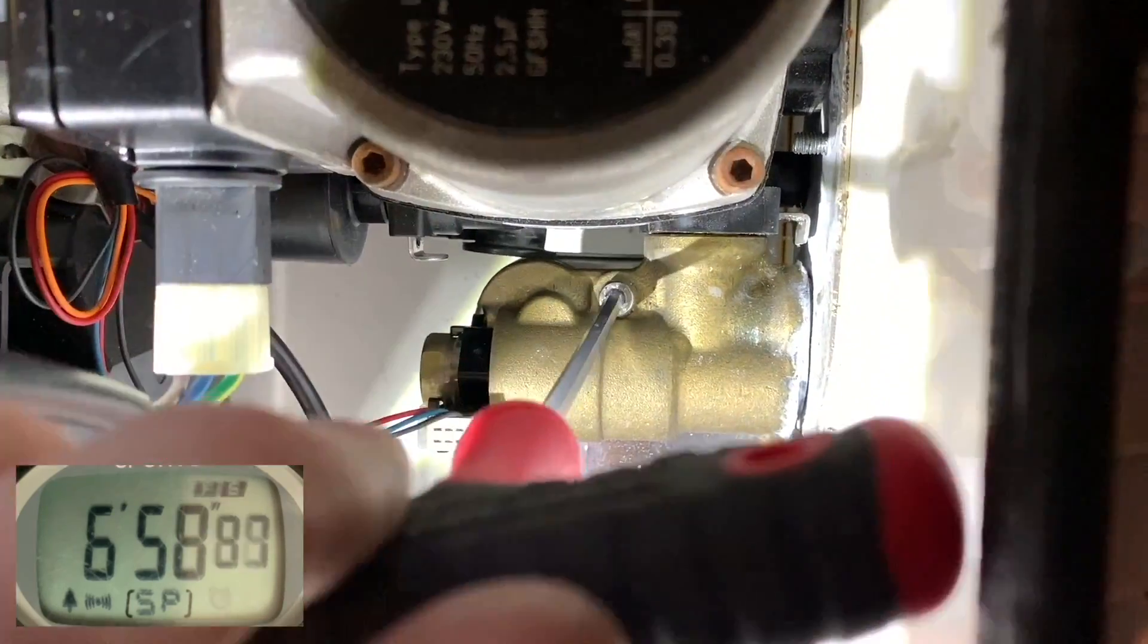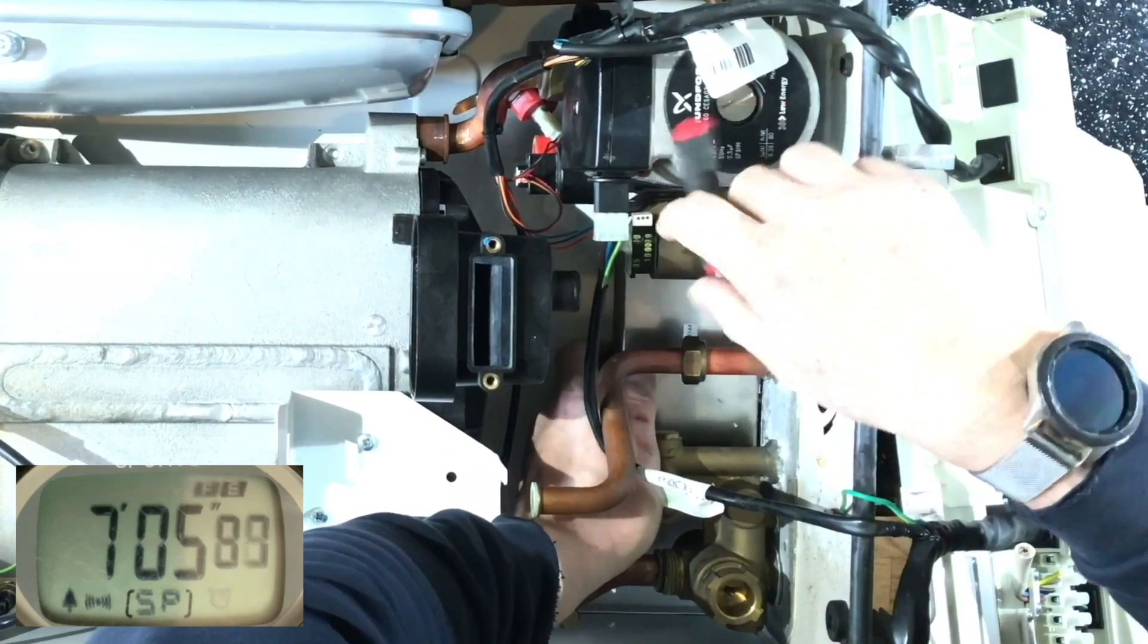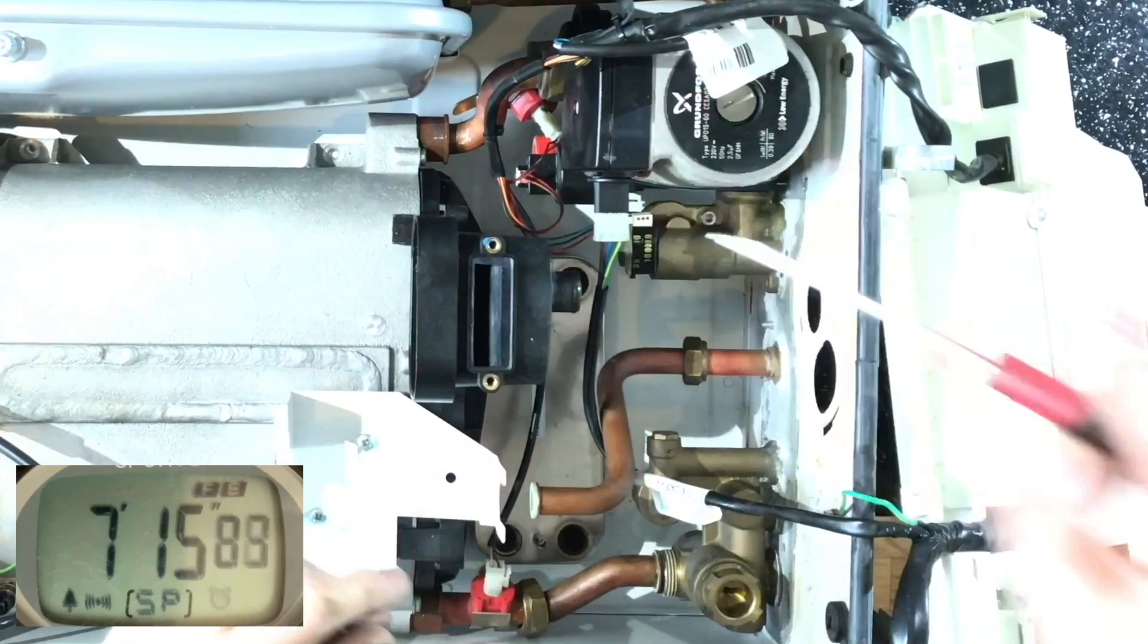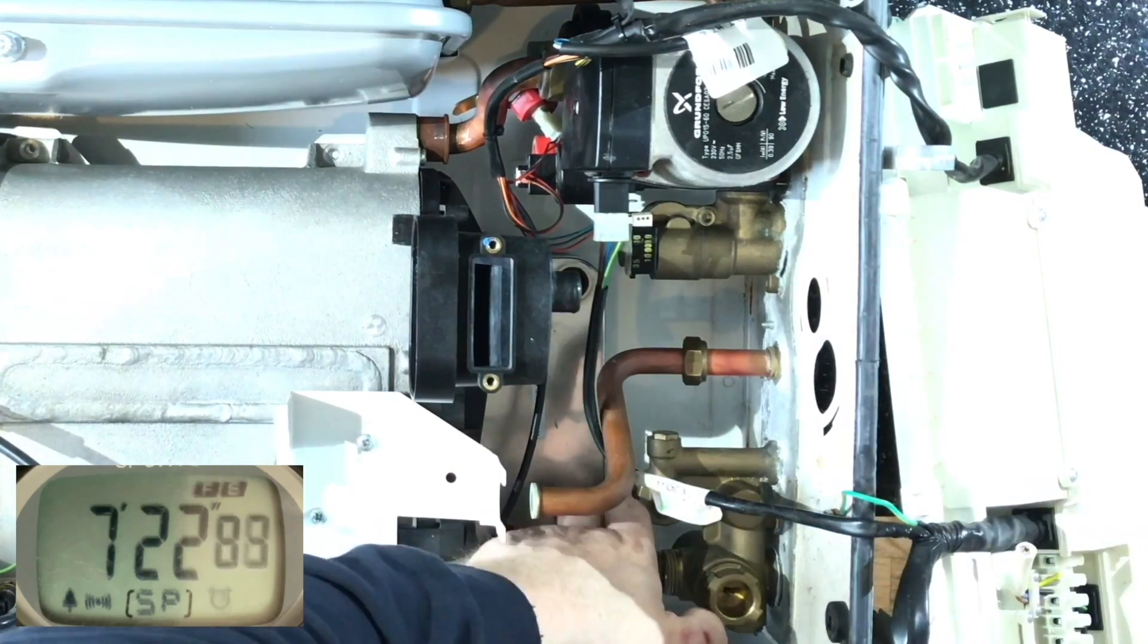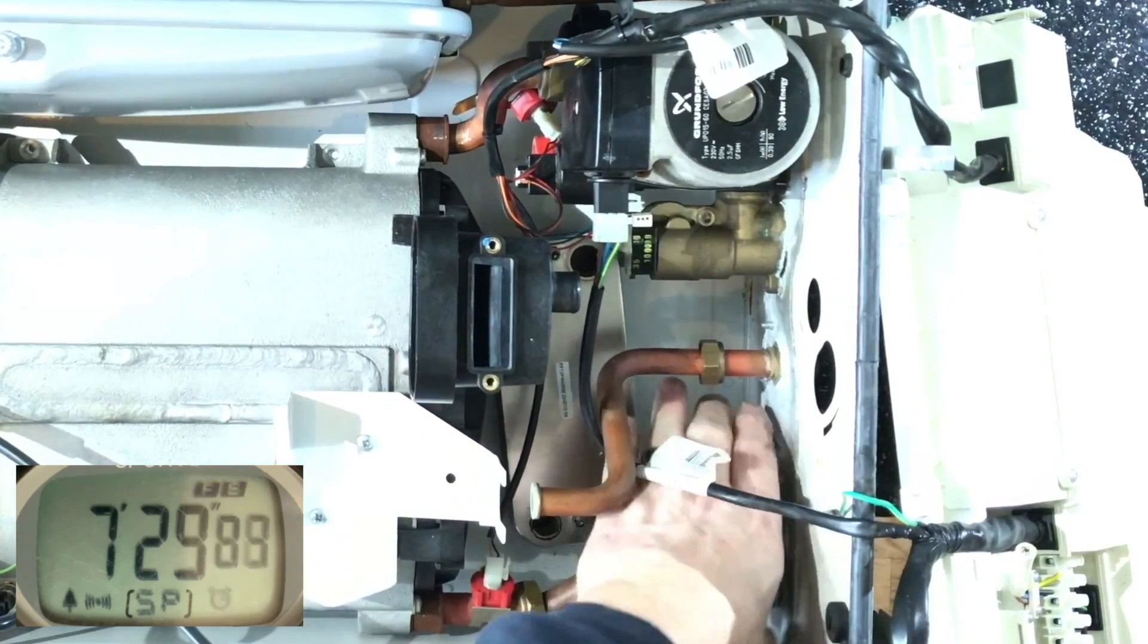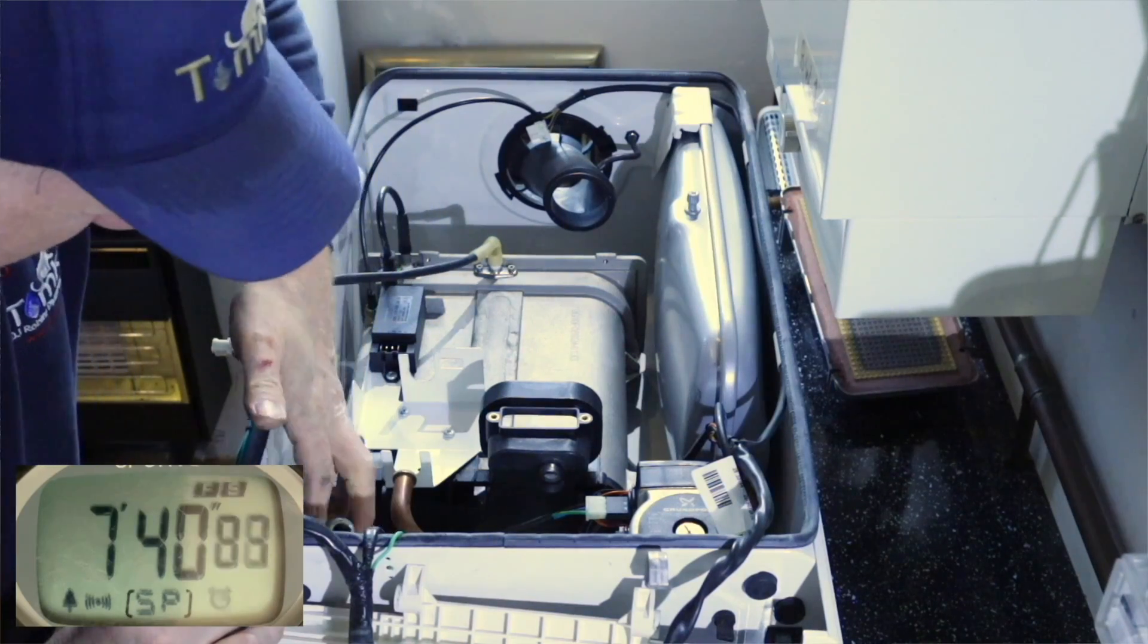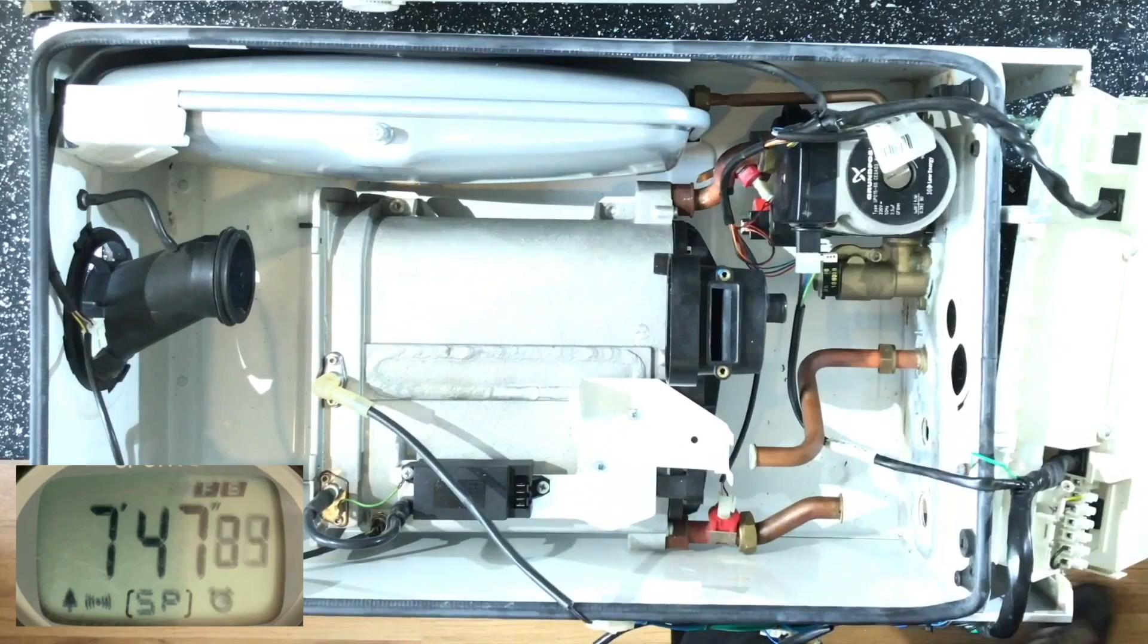Now this plate-to-plate heat exchanger is dead easy to remove. It's just literally these two Allen screws, 4mm Allen screws, dead easy to remove. So I'm just going to drop this down at the bottom of the boiler case, and then I'm going to remove this left-hand side hydro block, so then I can take the plate-to-plate out easier.